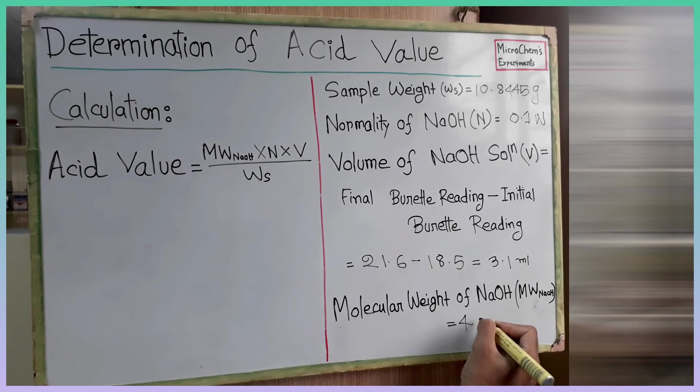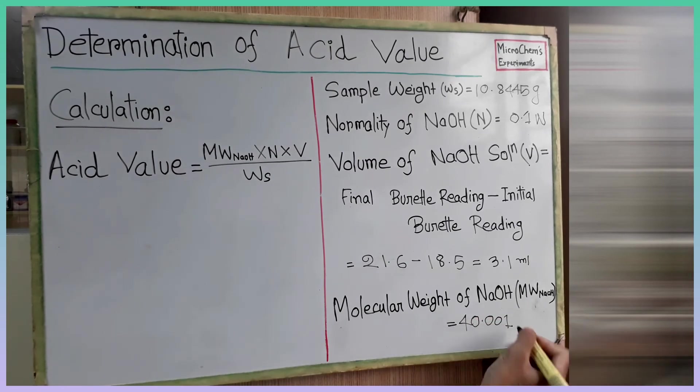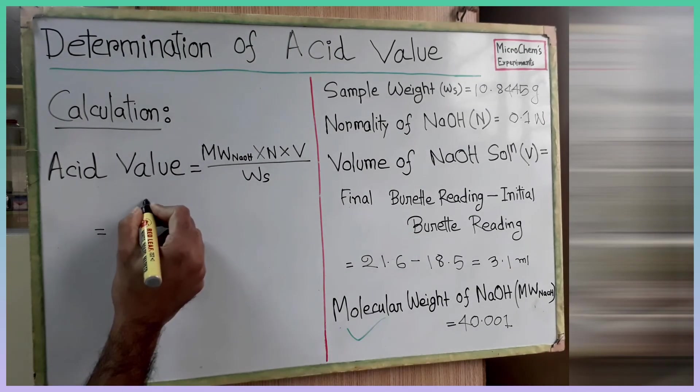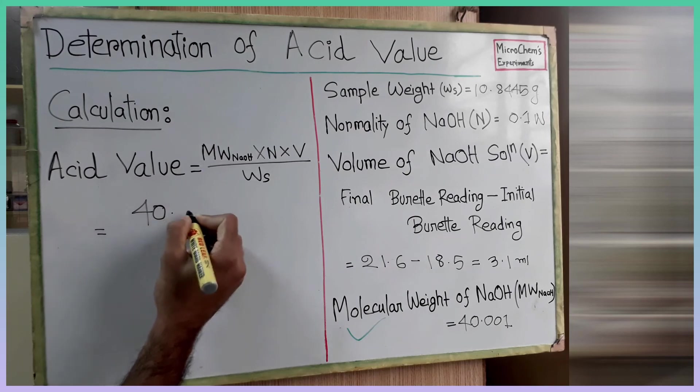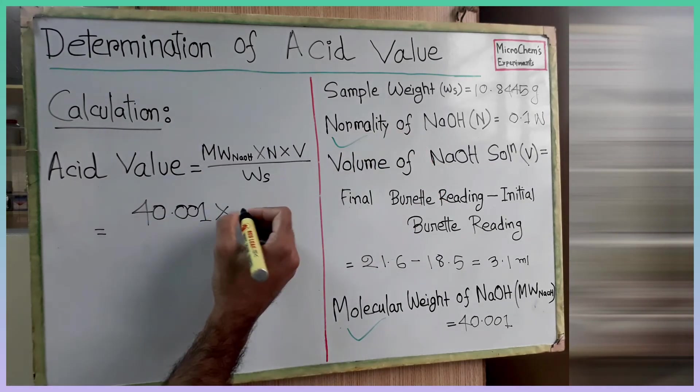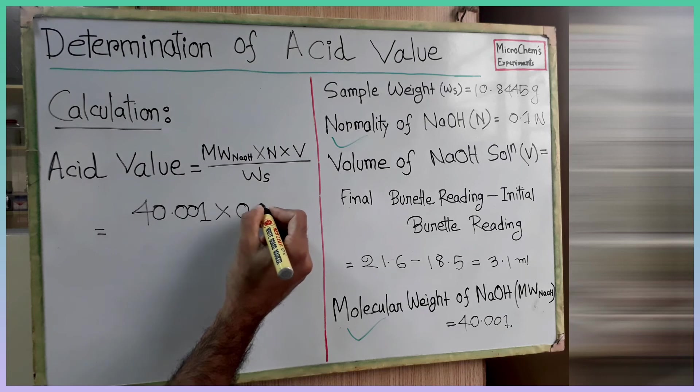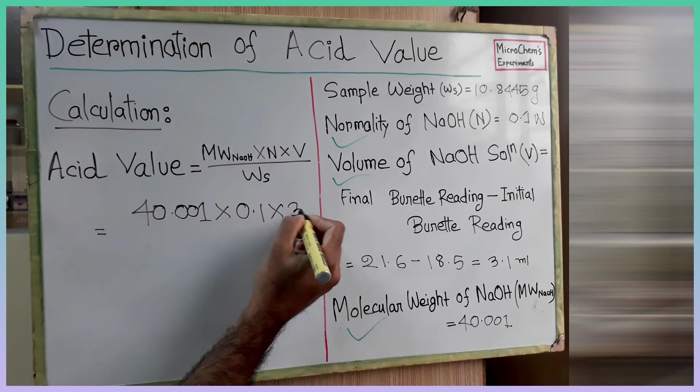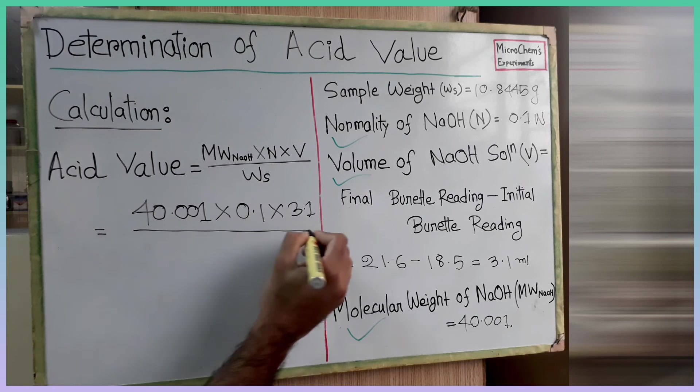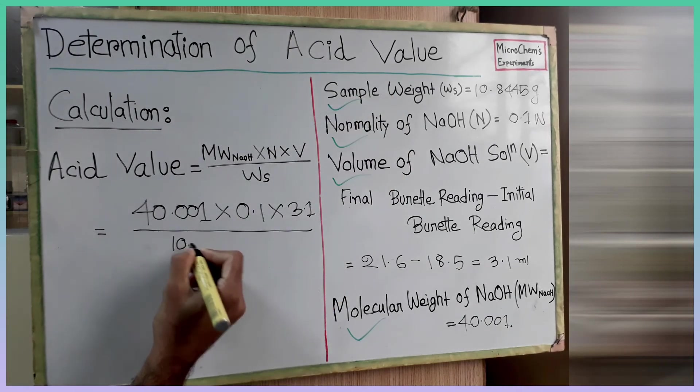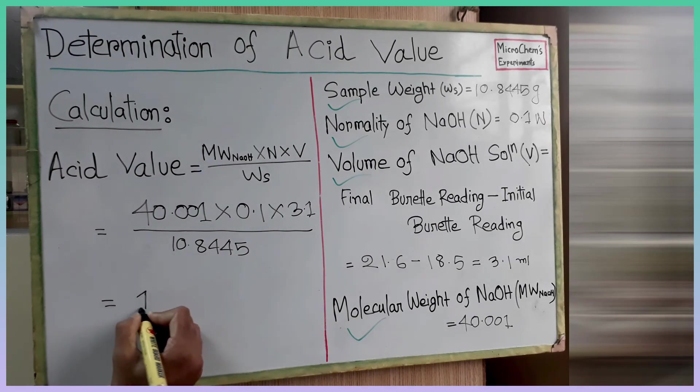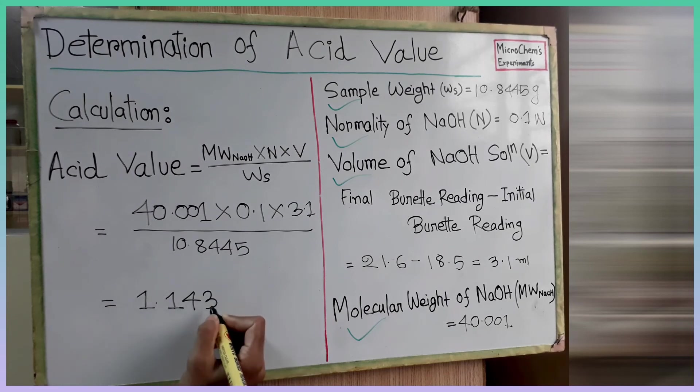We all know the molecular weight of sodium hydroxide is 40. Let's put all of the values in the equation given in the left side of the board. By solving the equation, we get the acid value of our sample is 1.143.